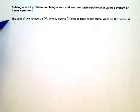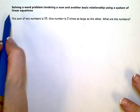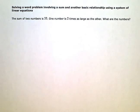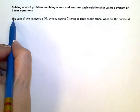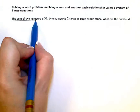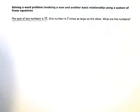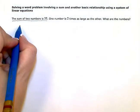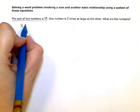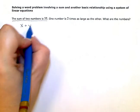I'm going to write two equations, a system of equations that are going to help me solve this problem. The first equation is going to deal with this first sentence that says the sum of two numbers is 33. If x and y are my two numbers and I know sum means add, my first equation is going to be x plus y equals 33.